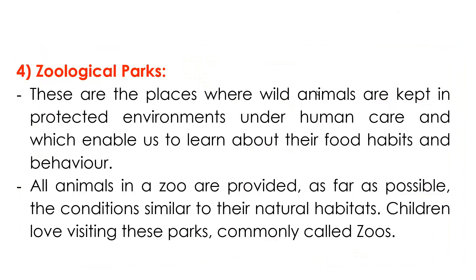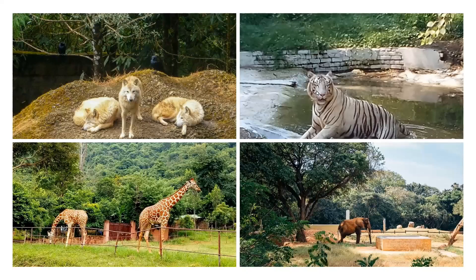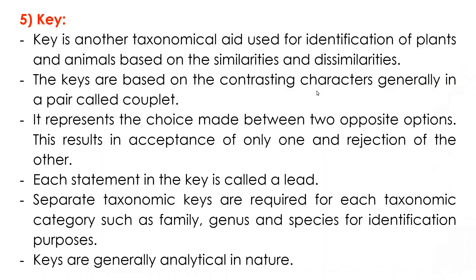The next taxonomical aid is zoological parks, which help zoologists in their research for taxonomical purposes. Zoological parks are places where wild animals are kept in captivity in protected environments under human care, enabling us to learn about their food habits and behavior. In zoos, conditions as similar as possible to the animals' natural habitats are provided. Children love visiting these parks, commonly called zoos.